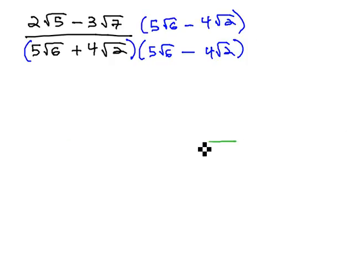And as we do, we need to remember in the numerator, we're multiplying by the entire numerator. This is going to force us to do some foiling.